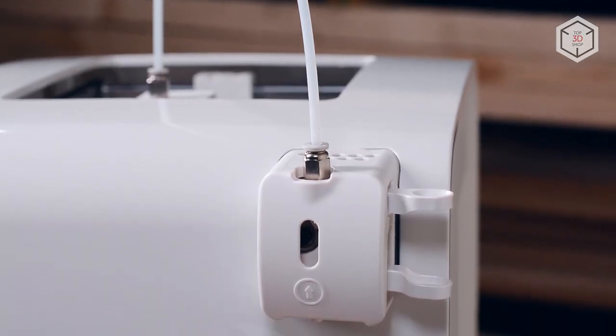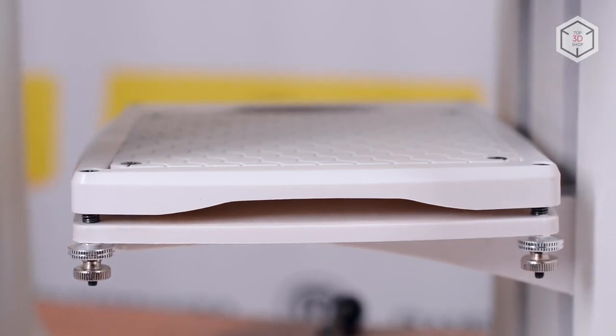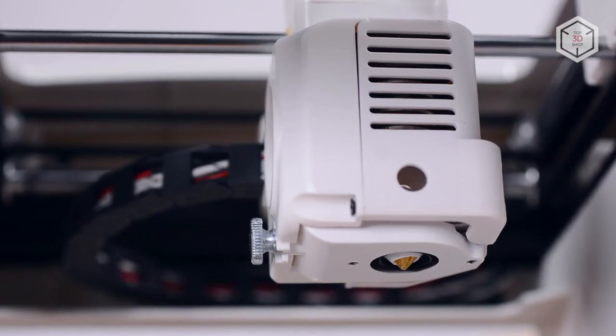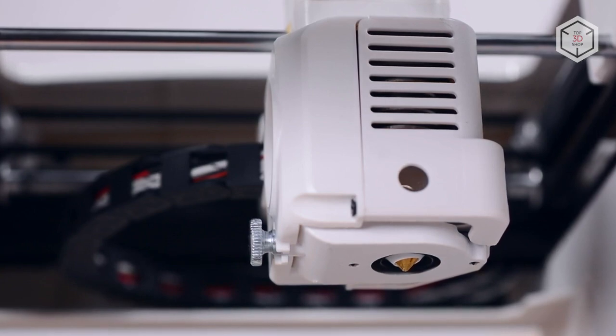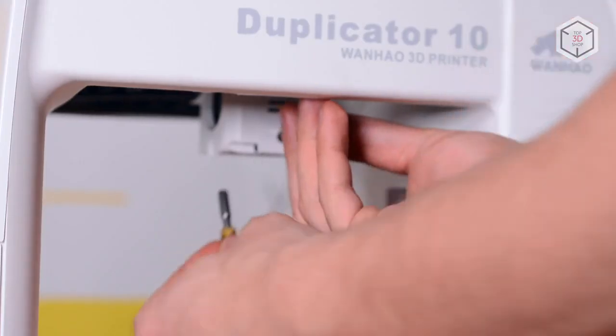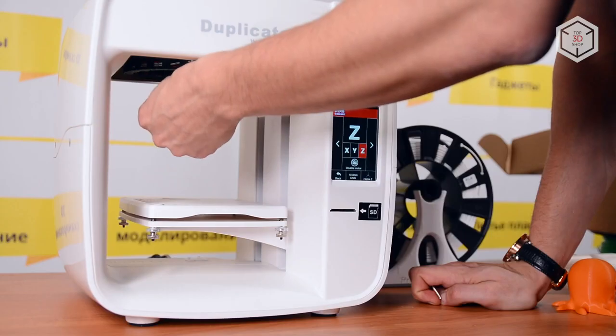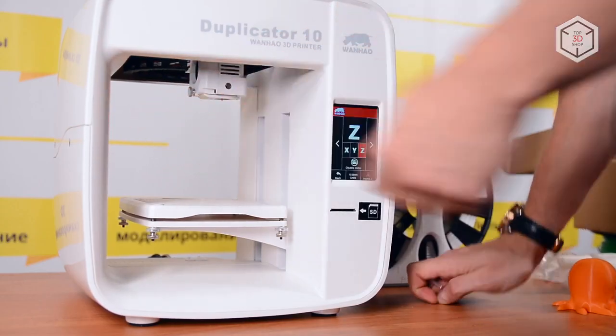Wanhao engineers tried to neatly hide all the moving parts inside the printer case. The nozzle was carefully shielded to protect the user from accidental burns. If necessary, the standard 0.4mm nozzle can be easily replaced. The entire removal and installation process won't take more than a few minutes.